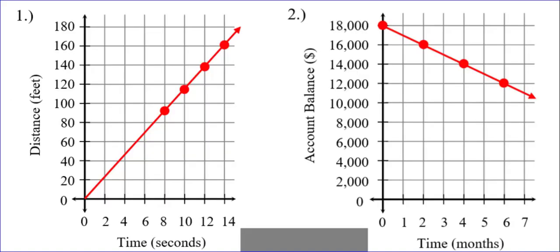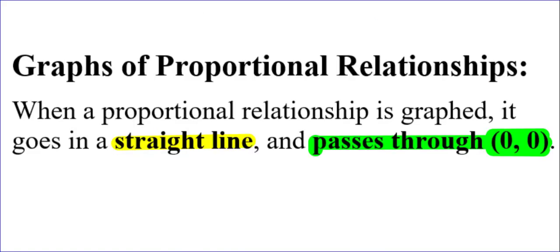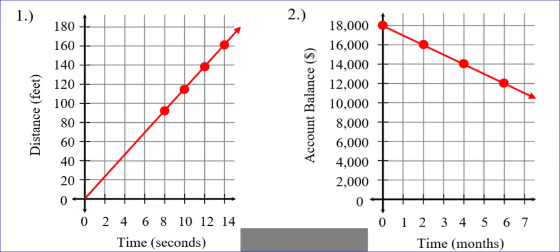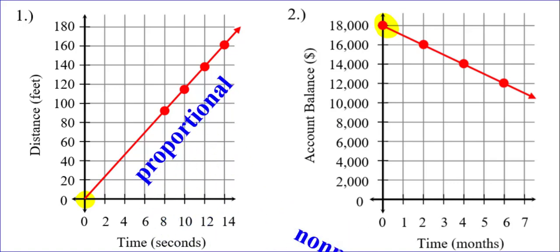Let's look at these two graphs. Can you tell which one is a proportional relationship? Well, they are both straight lines, but do they both go through the origin? The origin is (0, 0), and the first graph does go through (0, 0), but the second graph goes through (0, 18,000). That's definitely not (0, 0), so the first graph is proportional, and the second graph is non-proportional.